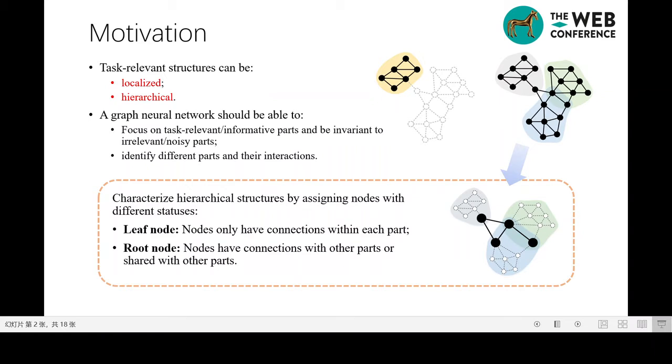The nodes within it play different roles in demonstrating the hierarchical structure. Some nodes only constitute the structure of the corresponding part. We call them leaf nodes. Others further constitute the interaction of different parts. We call them root nodes. Similarly, the hierarchical structures can be extended to a height larger than two, with the above concepts unchanged.